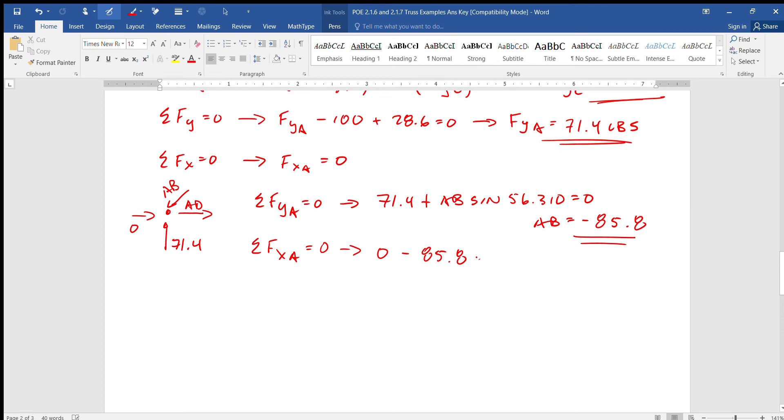So we get zero because of that right force and then it'll be pushing left, so it is a negative 85.8 cosine. You know what, I'd rather do this differently. I'm going to put it at the end. I forgot to put AD in there. Zero plus AD plus negative 85.8 times cosine of 56.310 equals zero.